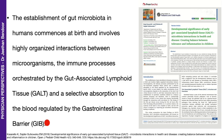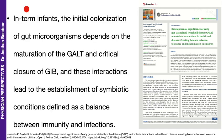The gut-associated lymphoid tissue is very important because there is a barrier that lies between the contents of the gut and the gut itself — the blood vessels and all the other tissue of the gut. In term infants, the initial colonization of gut microorganisms depends on the maturation of the GALT and critical closure of the GIB, or the gastrointestinal barrier. These interactions lead to the establishment of symbiotic conditions, defined as a balance between immunity and infections.